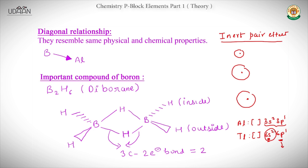Now we move to the diagonal relationship. Boron and Aluminium resemble each other in physical and chemical properties, and that is why they are said to have a diagonal relationship.